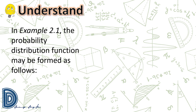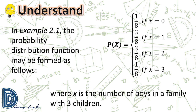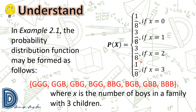In this example, where x is the number of boys in a family with three children, the probability distribution function is: p(x) = 1/8 if x = 0; 3/8 if x = 1; 3/8 if x = 2; 1/8 if x = 3. For x = 0 (no boys, all girls), there is only one situation out of eight, giving 1/8. For x = 1 (one boy), there are three arrangements — GGB, GBG, BGG — giving 3/8.